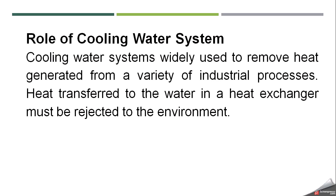What is the role of a cooling water system in industry or in a power plant? Basically, cooling water systems are widely used to remove heat generated in industrial processes in a variety of ways. In power plants, it is used to cool steam, and in other industrial processes like chemical production, it is used to cool the system. Cooling water takes the heat from heat exchangers or other heat transfer equipment and rejects this heat into the environment.